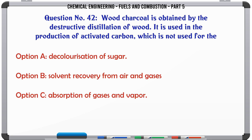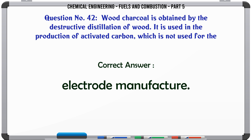Wood charcoal is obtained by the destructive distillation of wood. It is used in the production of activated carbon, which is not used for: A. Decolorization of sugar. B. Solvent recovery from air and gases. C. Absorption of gases and vapors. D. Electrode manufacture. The correct answer is electrode manufacture.